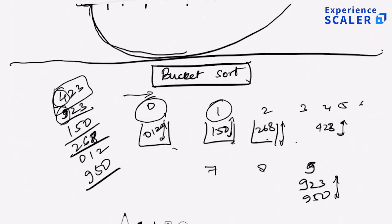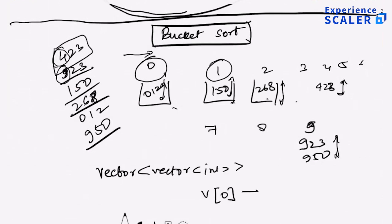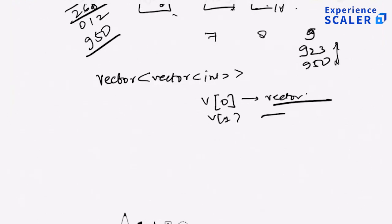What kind of data structure can I use for buckets? Think of them as a vector of vector of int. So V[0] is a vector of numbers, V[1] is also a vector of numbers, and so forth. The concept of bucket sort is simple: if you can split numbers into buckets where buckets themselves are ordered, then sort numbers within the buckets and merge them — that gives a sorted answer.